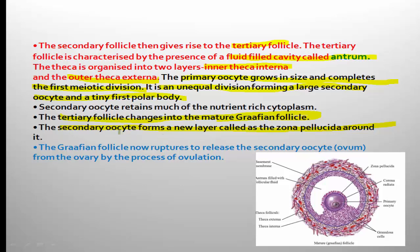When the graafian follicle ruptures, it releases the secondary oocyte from the ovary — this process is called ovulation. Very important one-mark question: ovulation is the release of the secondary oocyte due to the rupturing of the graafian follicle from the ovary. Ovulation is influenced by the pituitary hormone LH, that is luteinizing hormone.